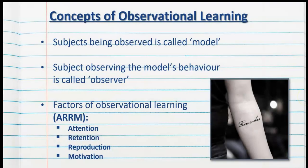Because of the Bobo Doll experiment, concepts of observational learning have been established. The subject being observed is called the model, and the subject observing the model's behaviour is called the observer. There are several factors of observational learning, but for now we're going to talk about the actual process, including attention, retention, reproduction and motivation — or ARM.